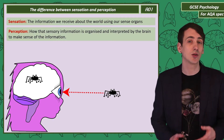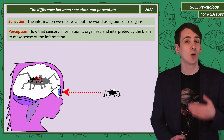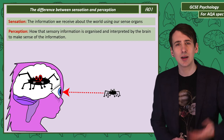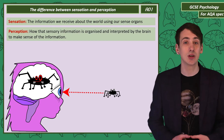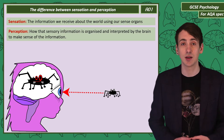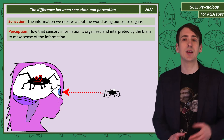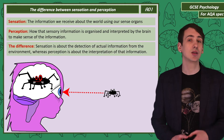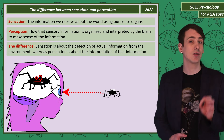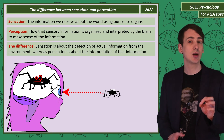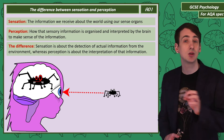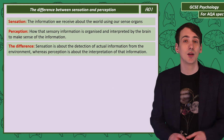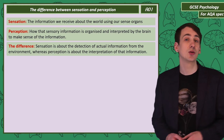Some psychologists argue that what we perceive is often very different from what originally came to the senses. To clarify: sensation is about the detection of actual information, and perception is about interpretation. So let's look at the visual illusions, starting with the Ponzo.